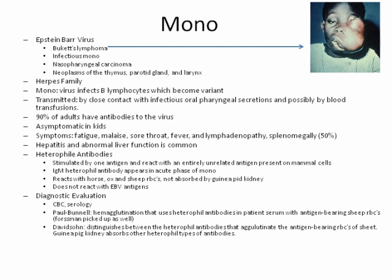Mono, or Epstein-Barr virus, can lead to Burkitt's lymphoma — you can see in the picture a tumor growing through lymph nodes, disfiguring the face. It can also cause infectious mononucleosis, nasopharyngeal carcinoma, and other neoplasms of the thymus, parotid gland, and larynx. It is a member of the herpes family, transmitted by close contact — it used to be called the kissing disease.